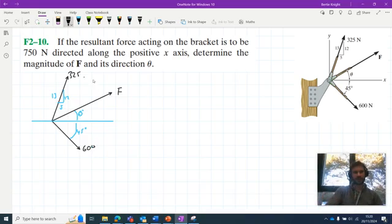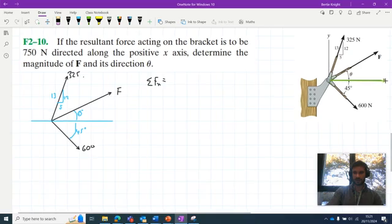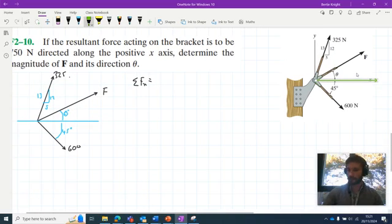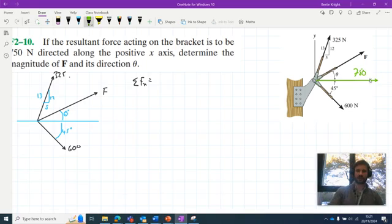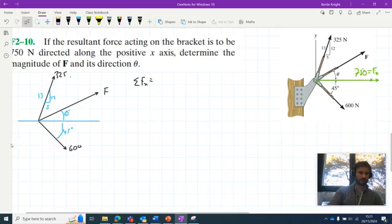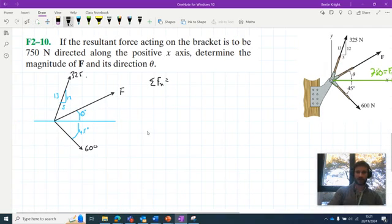I believe this is all the information we need. Let's go ahead then and resolve horizontally. The sum of the forces in the x... actually, let's take a step back and remind ourselves what's actually going on in this problem. It states if the resultant force acting on the bracket is to be 750 newtons. So what that's basically saying is when I add up all of these three forces together, the result is a 750 newton force acting along the x-axis. This is our result force, F subscript R.